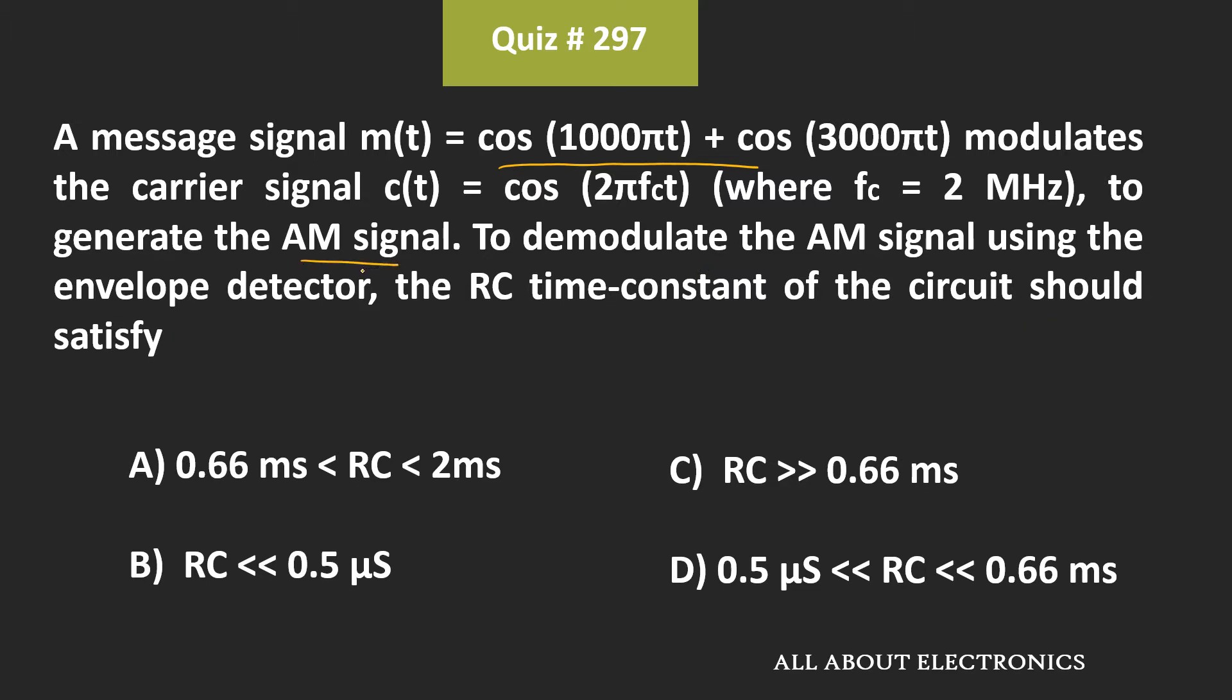Now this AM signal is demodulated using the envelope detector. So here, we have been asked to find the condition which is required for the RC time constant of this envelope detector.